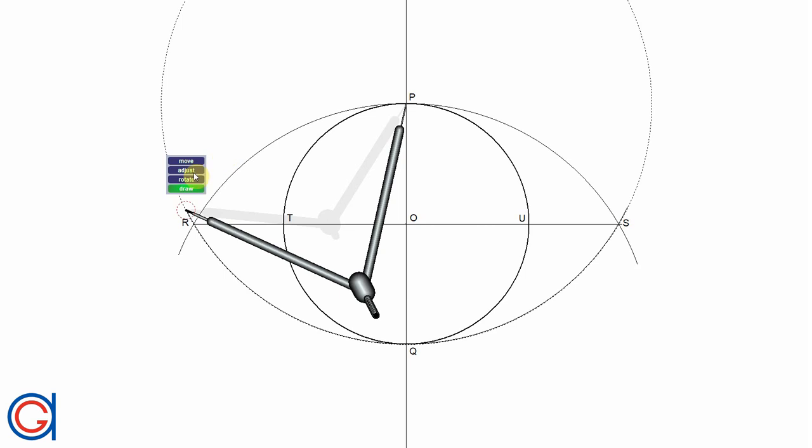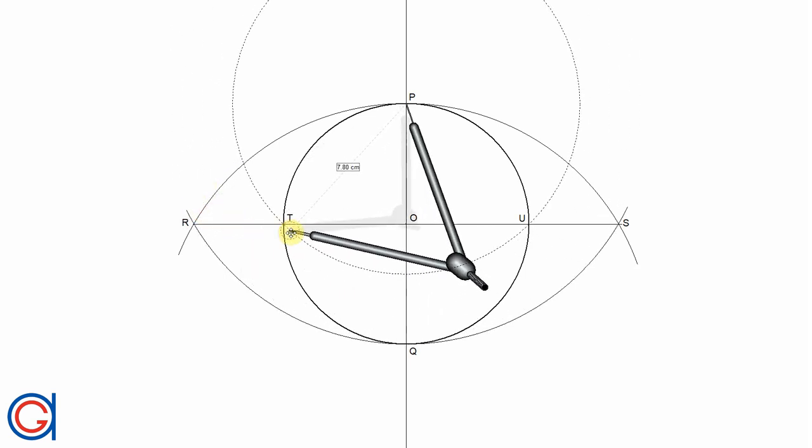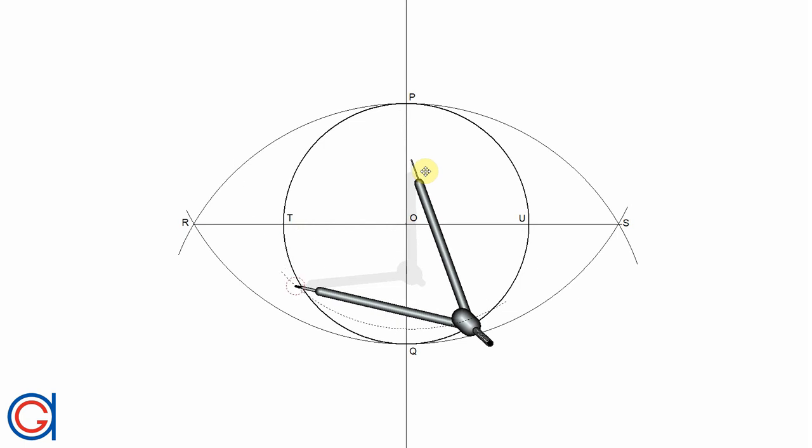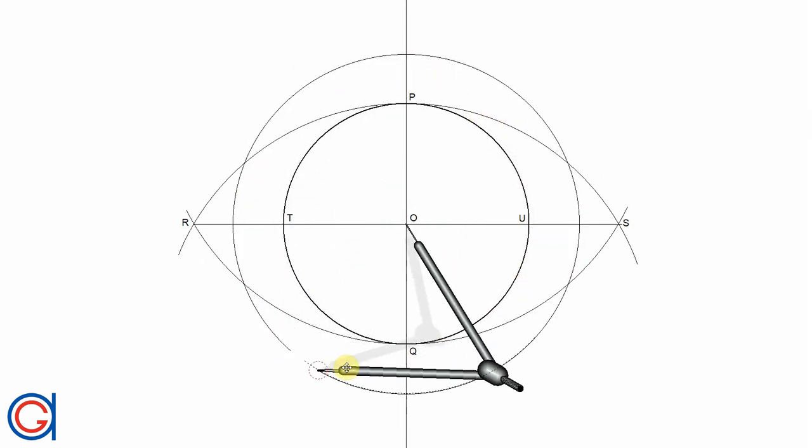So now setting our compass on point P and setting the radius to the length PT. We set the compass on the origin O and we are going to draw another circle. All of these lines so far are construction lines, very light lines.